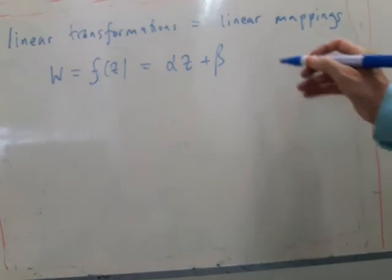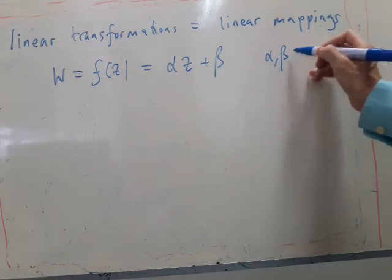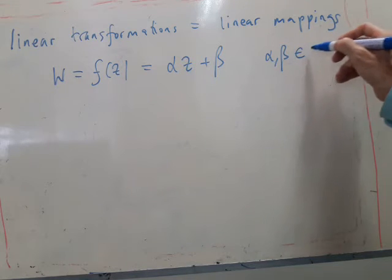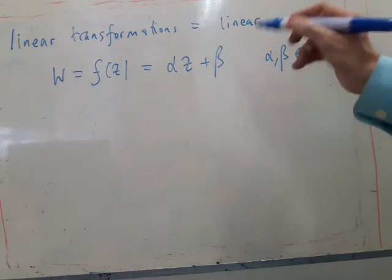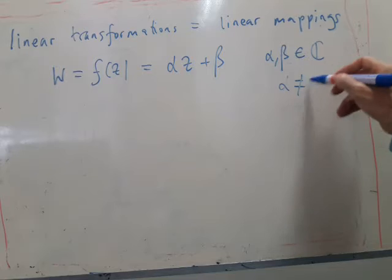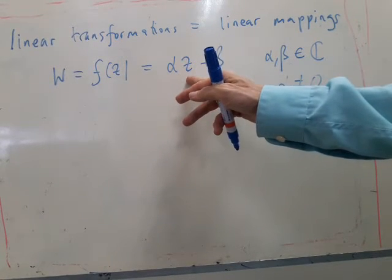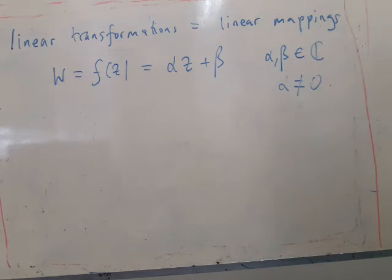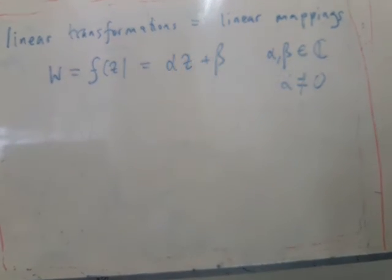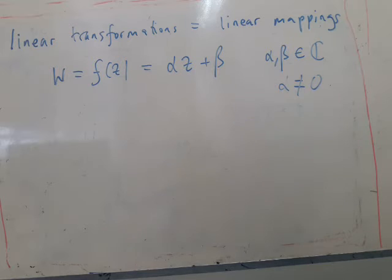where alpha and beta are any complex numbers except alpha is not allowed to be zero. If alpha was zero, this would be many to one. You'd end up with not a very interesting map. All points get mapped to a single point.